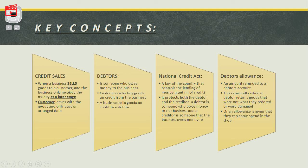The National Credit Act is a law of the country that controls the lending of money or the granting of credit. The National Credit Act protects both the debtor and the creditor. A debtor is someone who owes me money — me being the business. A creditor is someone that I, the business, owe money to.